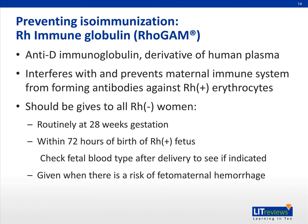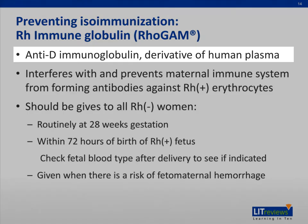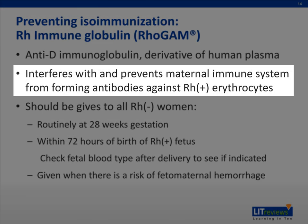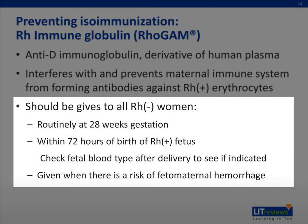An important tool that has been developed to prevent isoimmunization is RhoGAM. RhoGAM is an anti-D immunoglobulin and a derivative of human plasma. It interferes with and prevents the maternal immune system from forming antibodies against Rh positive erythrocytes. It is administered as an intramuscular injection. It should be given to all Rh negative women in the following circumstances: routinely at 28 weeks of gestation, within 72 hours of the birth of an Rh positive fetus, or when there is a risk of fetal-maternal hemorrhage during the pregnancy. It is important to note that physicians should check the fetal blood type after delivery to see if giving RhoGAM is indicated. If the fetus is Rh negative, then RhoGAM is not indicated.